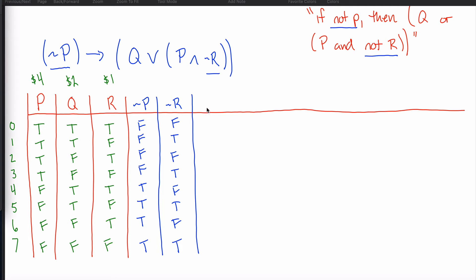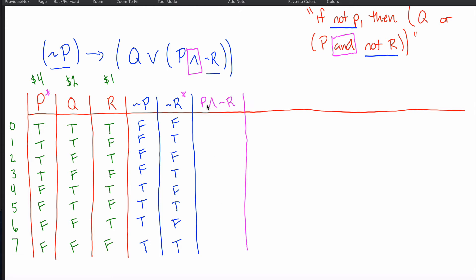With negations done, I look for conjunctions that connect two things I already have columns for. The 'or' conjunction here connects Q with 'P and not-R' — I don't have that second part yet so I can't tackle it. Similarly another conjunction references 'not-P' with 'Q or P and not-R' — not ready yet. But this 'and' right here connects P and not-R, which I already have columns for — so I can compute 'P and not-R' now.